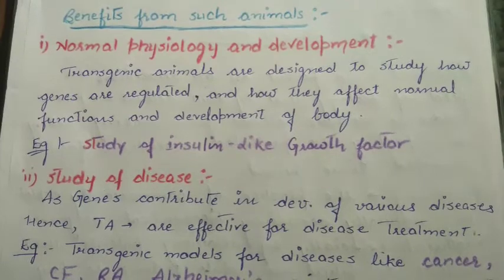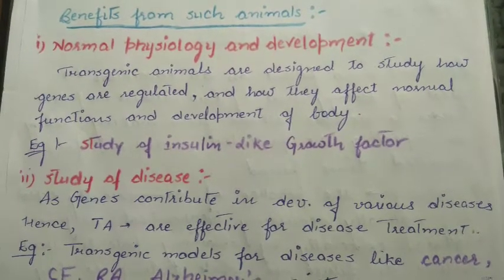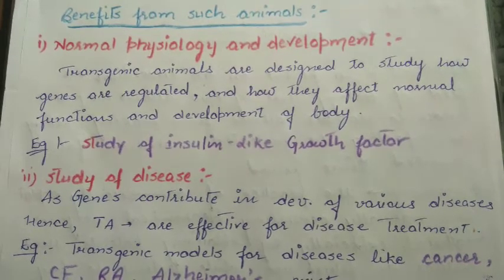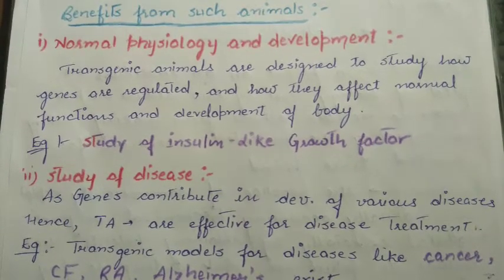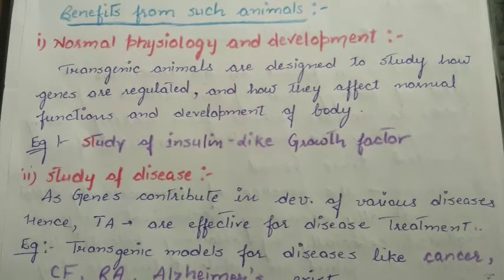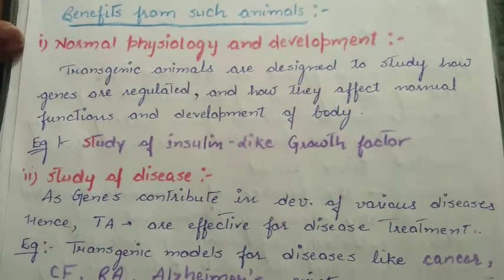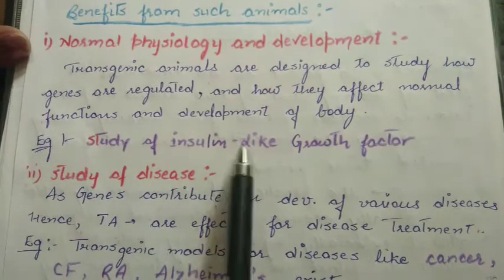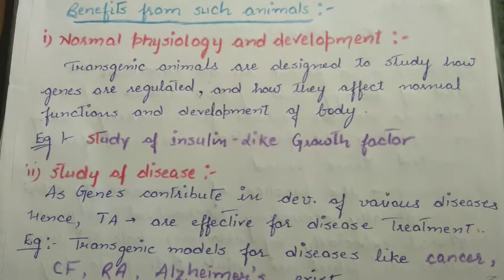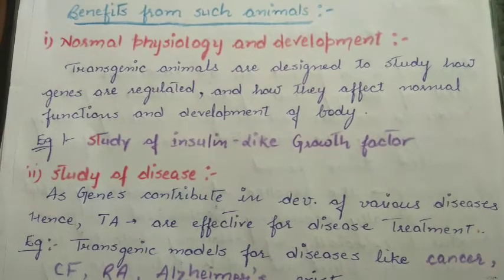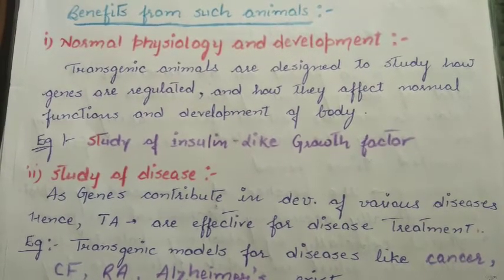By changing genes in transgenic animals, we change the expression of the gene, which results in new proteins. The best benefit is to study the animal's normal physiology and development. For example, we can study insulin-like growth factors. The growth factors are present in the body, and insulin-like growth factors have a composition that resembles insulin and function as growth factors.